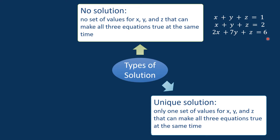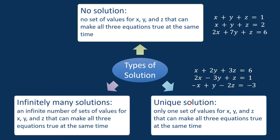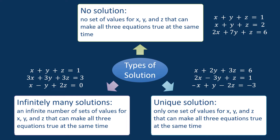Third, infinitely many solutions — this occurs when there are an infinite number of sets of values of x, y, and z that can make all three equations true at the same time. This can happen when the system has a free variable, which is a variable that is not fixed by the equations. In this case, we can choose any value of x and then use the equations to find the corresponding values of y and z, meaning there are infinitely many solutions.